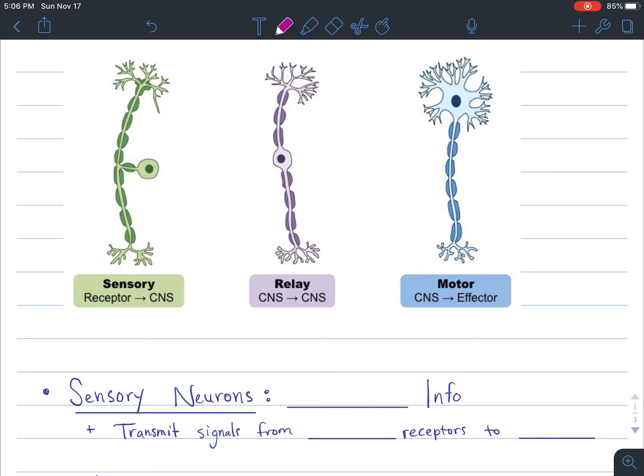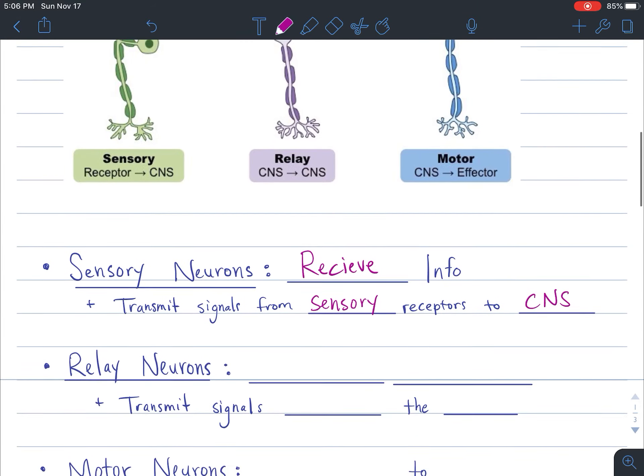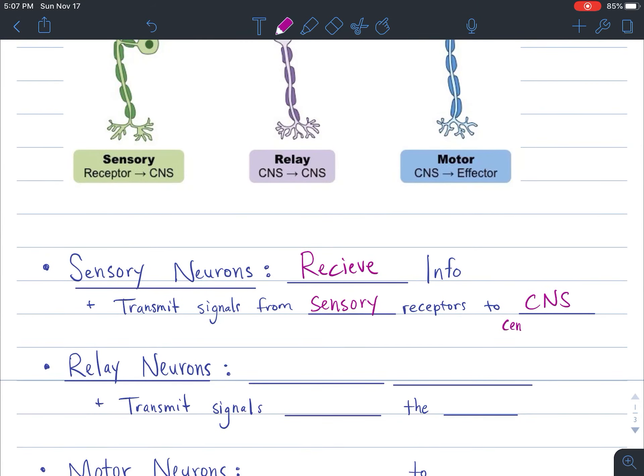Our sensory neurons are things that receive info. Essentially, they transmit signals from our sensory receptors to our CNS. And in this case, CNS stands for central nervous system, which is basically our brain.